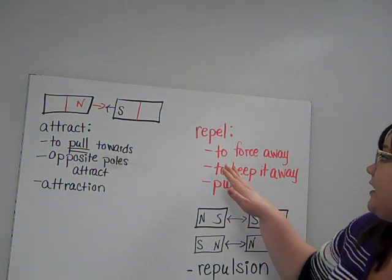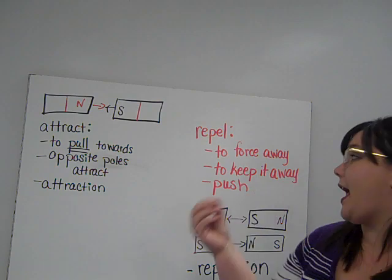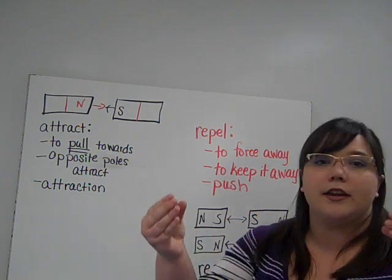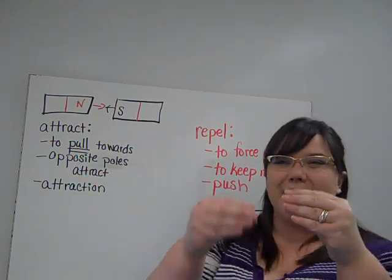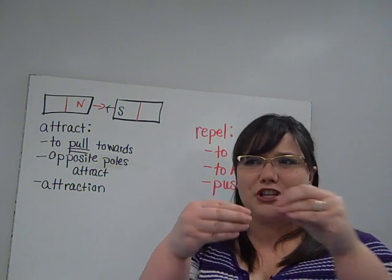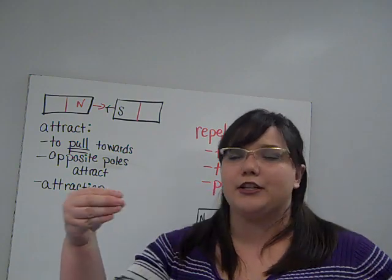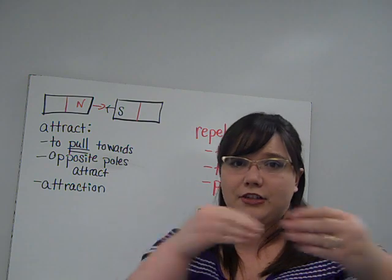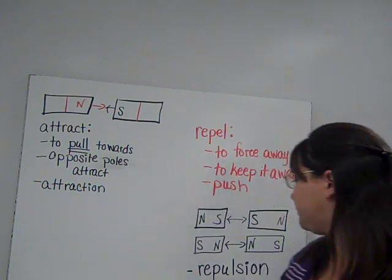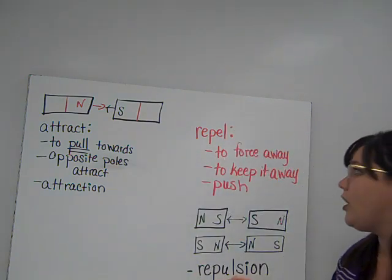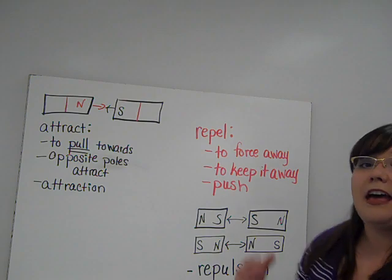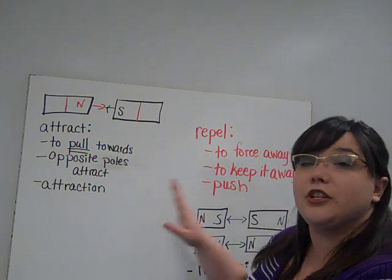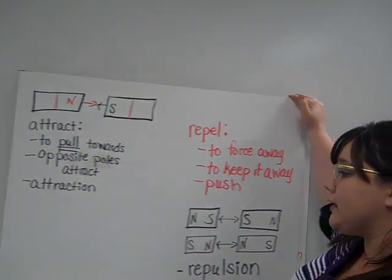Repel with magnets is to force away, to push it away. So if you take a south end and a south end of a magnet and put them together, they push each other away and repel each other. If you take a north end and a north end, they repel each other — they push away. We call this repulsion. And we're going to talk about how electricity can cause this attraction and repulsion of other objects.